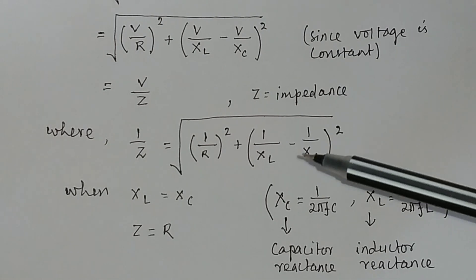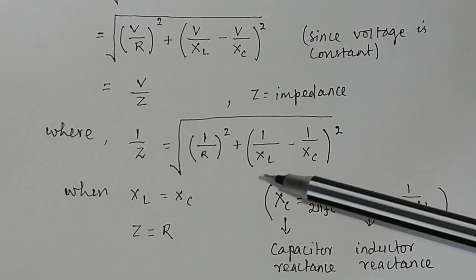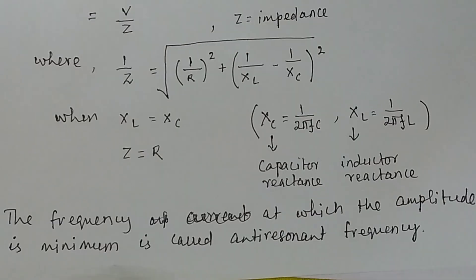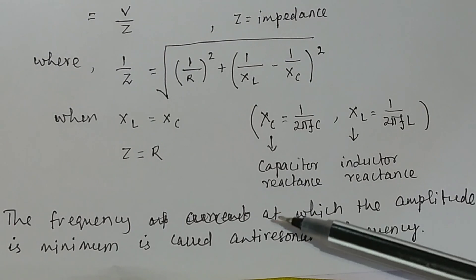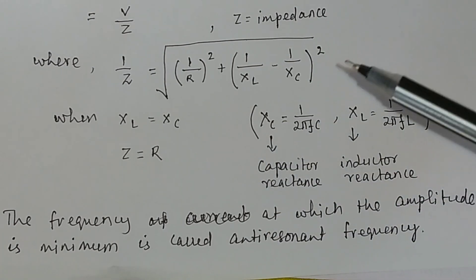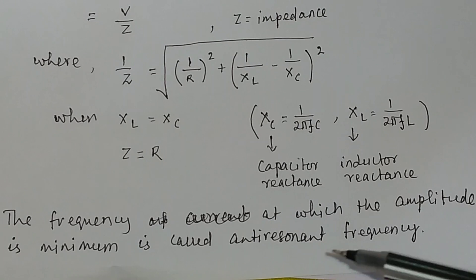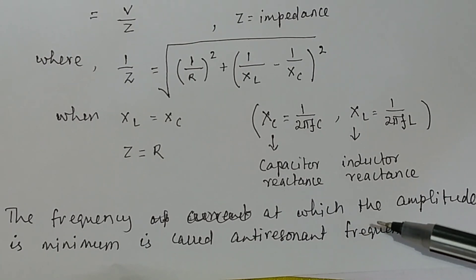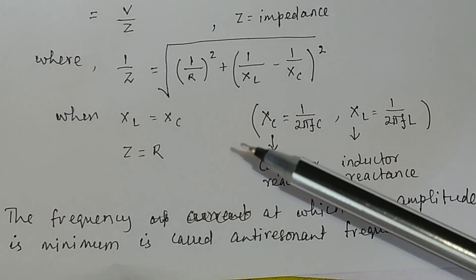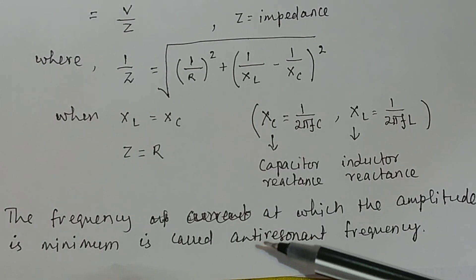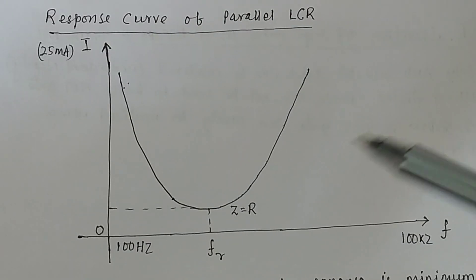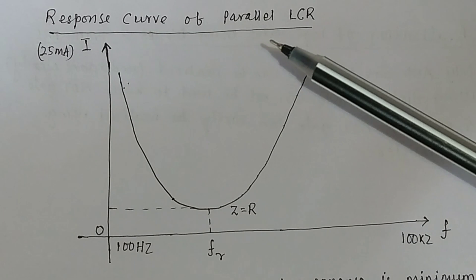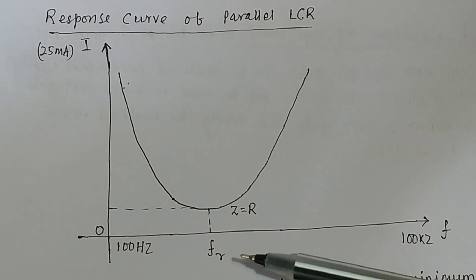If XC equals XL, then Z equals R. So in a parallel LCR circuit, the frequency at which the current amplitude is minimum is called the anti-resonance frequency. You can find the anti-resonance frequency from the response curve of the parallel LCR circuit — that is called the frequency response curve.